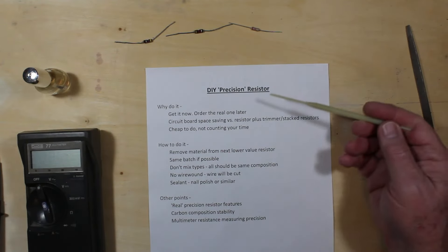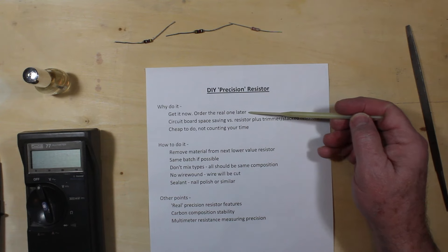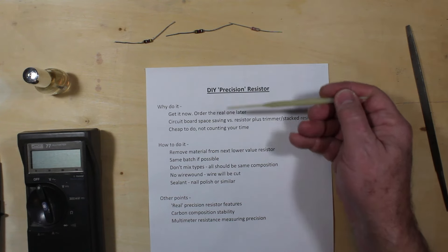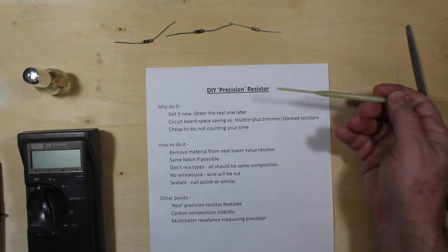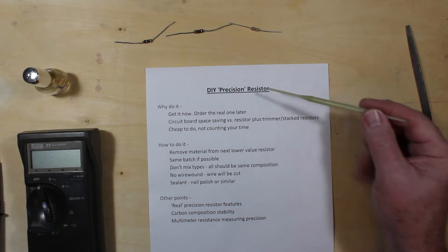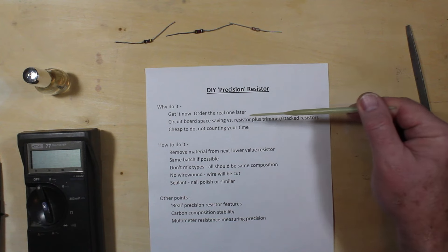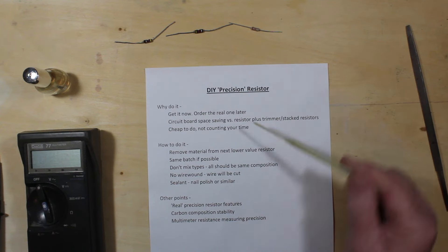So why would you do this? First of all, you get it now when you want a precision resistor or you need a couple of them for some particular circuit or a lot of them for a, say, an R2R ladder or something like that for your digital to analog converter, you can make them right now.